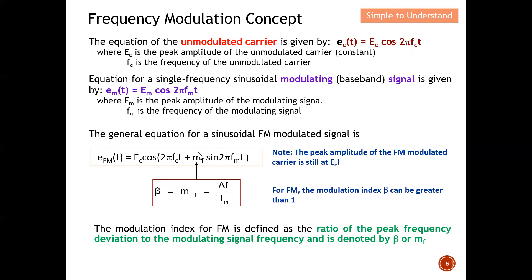Remember, for frequency modulation we are not going to change the amplitude — we are only going to change the frequency. The frequency of the modulated signal changes according to the amplitude of the modulating signal. The peak amplitude of the FM modulated signal is still EC, which means it retains the same amplitude as the carrier signal.